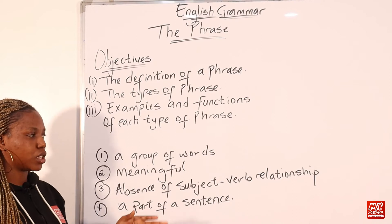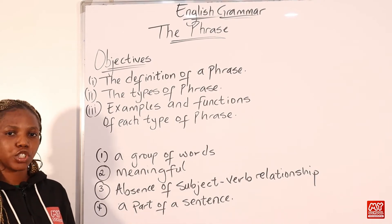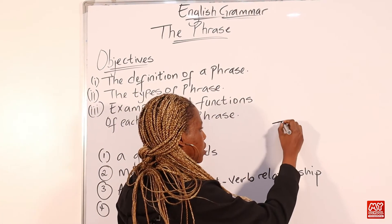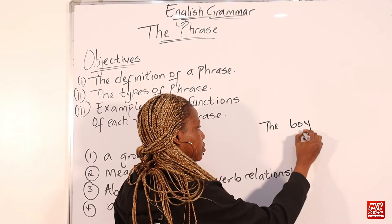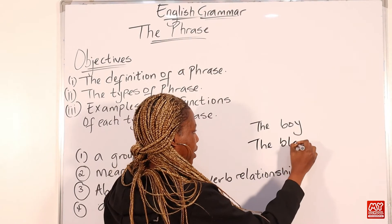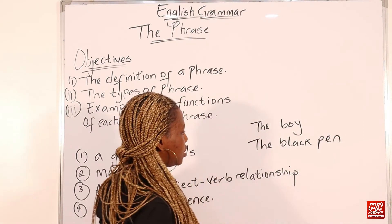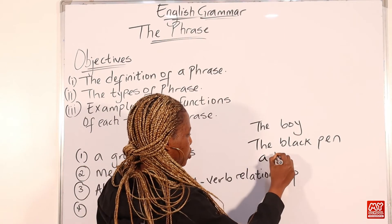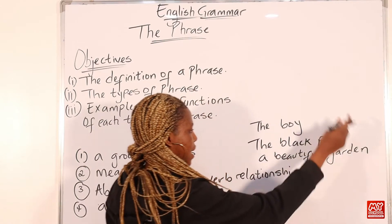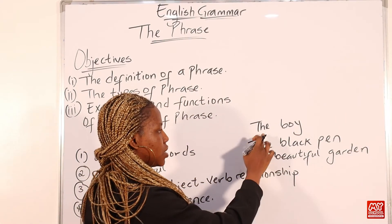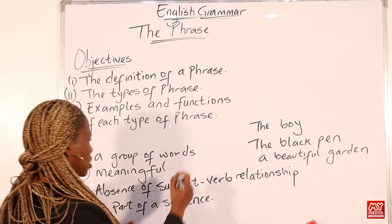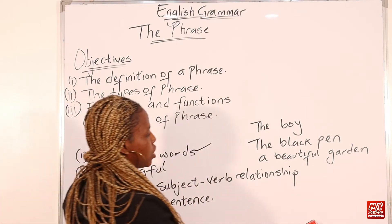Let's start with the first element — a group of words. A phrase is a combination of two or more words. For example: 'the boy,' 'the black pen,' 'a beautiful garden.' All of these are examples of phrases, with two words and three words respectively. So a phrase is a group of words.